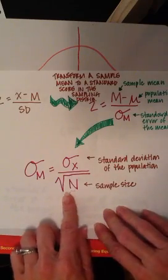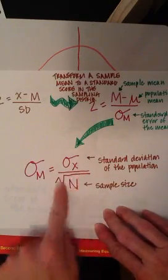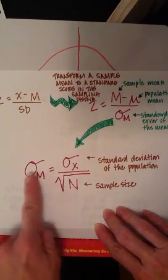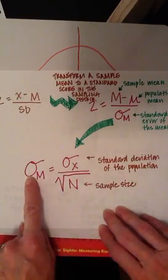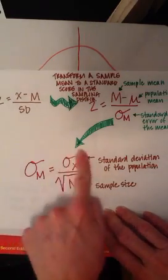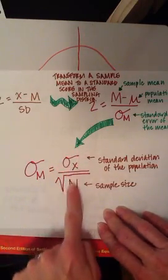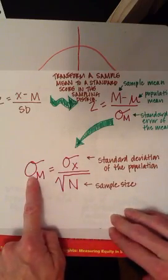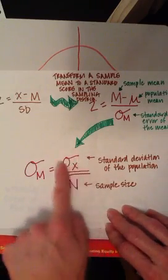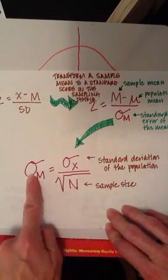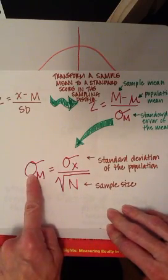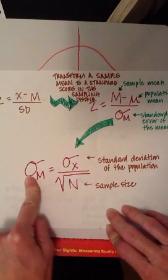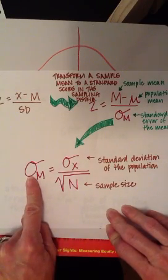As you can see, the larger the sample, the larger the number we have in the denominator, the smaller our standard error of the mean will be. Because any time you're dividing one number by a large number, you're going to end up with a small number, whereas if you divide a number by a small number, you're going to end up with a bigger number. So the larger the sample size, the smaller the standard error of the mean.